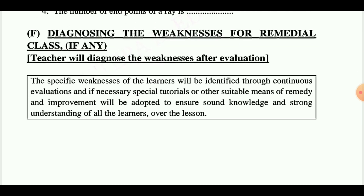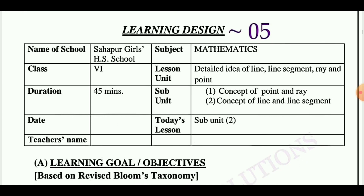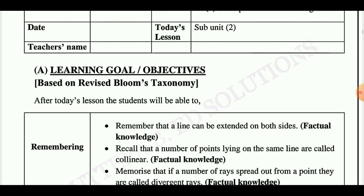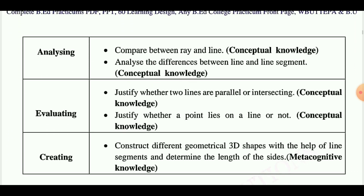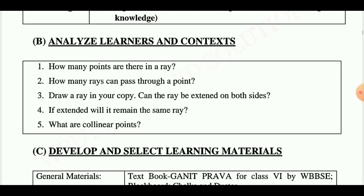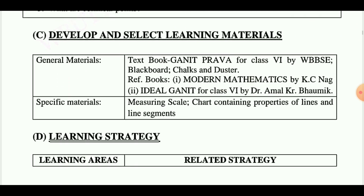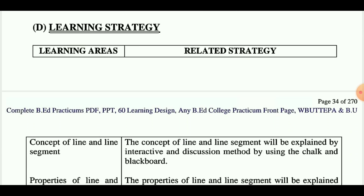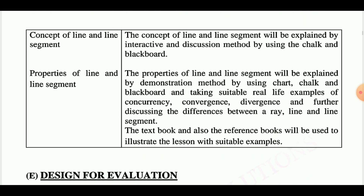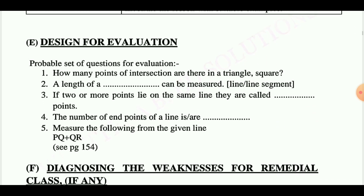Learning design number five is taken from class six and today's lesson is concept of line and segment. Learning goals are: remembering, understanding, applying, analyzing, evaluating, creating. Next point is analyze learner and context, then develop and select learning materials. Learning strategy is divided into two parts: learning areas and related strategies. Learning areas include concept of the line and line segment, and properties of line and line segment. Design for evaluation follows.